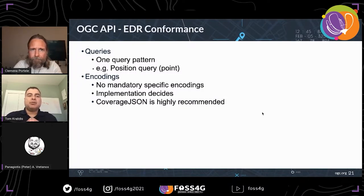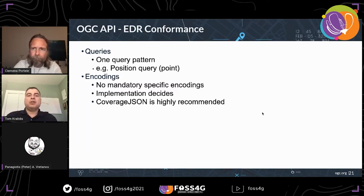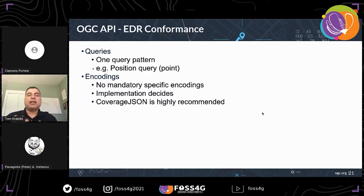In terms of conformance, it's relatively simple to set up your own EDR. You need to support the core conformance classes, and of all the query patterns supported, you only need to support one — the most common being the position or point query, where you pass a point into a given collection and ask what's at this point. There are no mandatory specific encodings — it's implementation-specific. We highly recommend coverage JSON, but NETCDF, GRIB2, and other formats are supported as well.